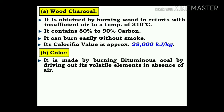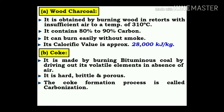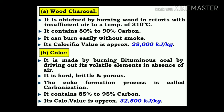Coke: it is made by burning bituminous coal by driving out its volatile elements in the absence of air. It is hard, brittle, and porous. The coke formation process is called the carbonization process. It contains 85% to 95% carbon. Its calorific value is around 32,500 kJ/kg.